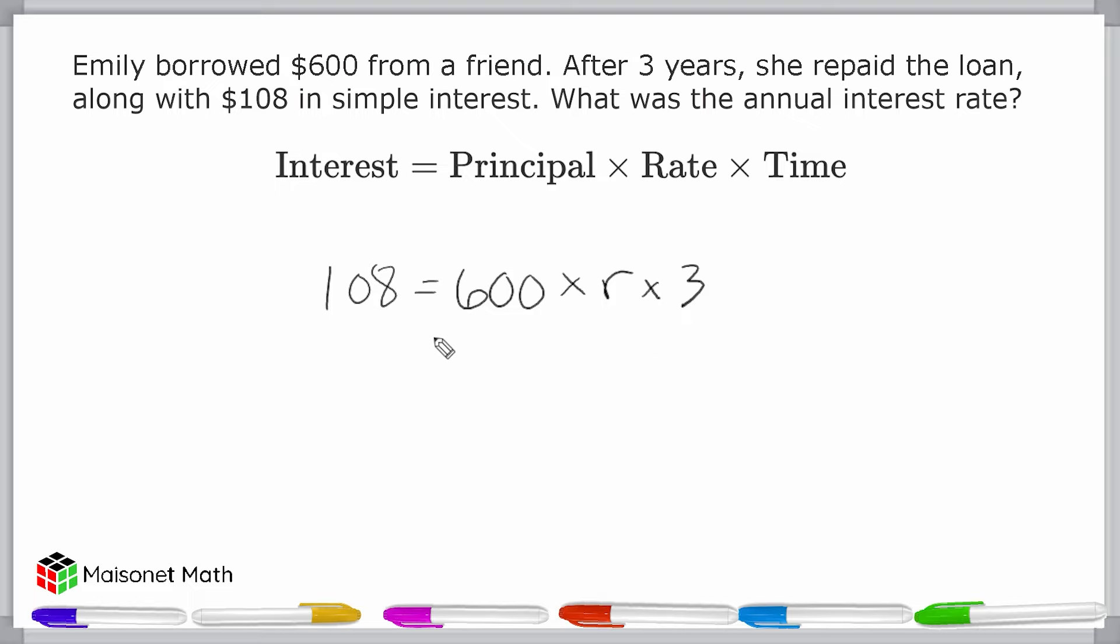So now what we have is an equation where all we have to do is solve for R. We're going to isolate the R in our equation. First, let's simplify the right side of our equation. We can multiply three times 600, which is 1,800.